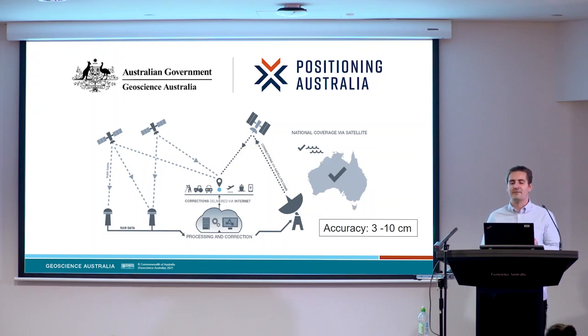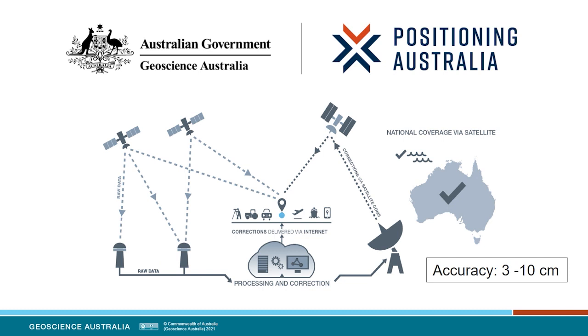Fortunately, nowadays levelling is not the only way to determine heights. Almost everyone has a GPS-capable device in their pocket that can tell them where they are at any time. GPS technology became widespread in the 1980s and 90s, and as the technology has matured, the accuracy of the positions has improved significantly. And very soon, thanks to the Positioning Australia program, GPS accuracy in Australia will be improved to around 3cm in areas with mobile phone coverage and 10cm everywhere else.